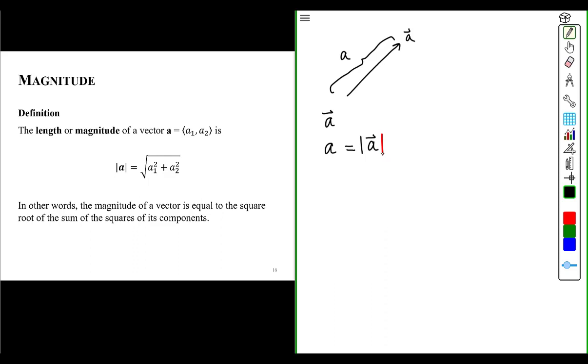We represent magnitudes explicitly by putting the vector in absolute values. You all know that the absolute value of a quantity always is a positive quantity. Since magnitudes represent amounts, or graphically lengths, magnitudes are always positive quantities.